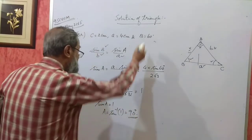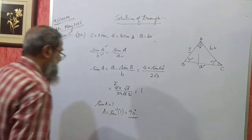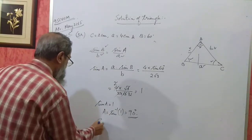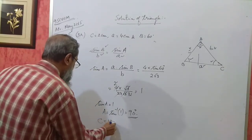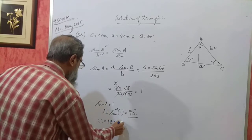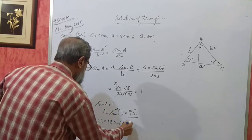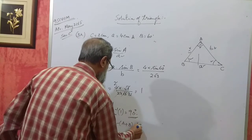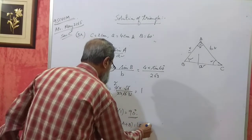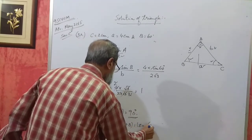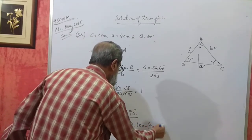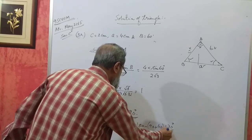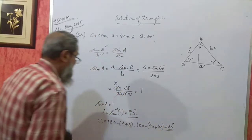So angle A is 90 degrees, angle B is 60 degrees. Angle C will be equal to 180 minus A plus B, that is 180 minus 90 plus 60, which gives 30 degrees. So you have solved the triangle.